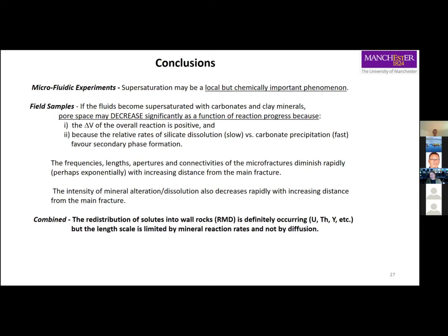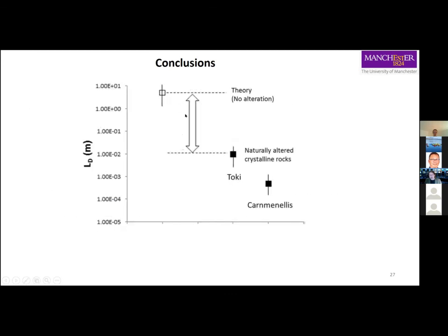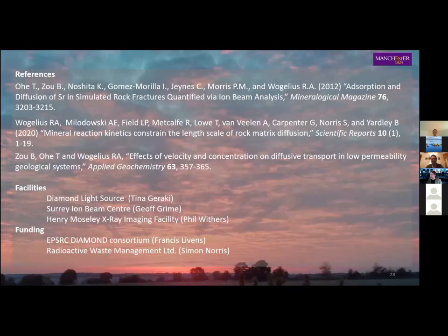The microporosity and fracture connectivity will probably decrease exponentially as you get further away from the fracture, as will rock alteration. The redistribution of solids into the wall rocks is definitely occurring, as shown by these tracers, but the length scale is limited by mineral reaction rates, not by diffusion. So that meter-scale length scale for secondary phase formation is probably not what needs to be considered for rock matrix diffusion — the relevant length scale is probably millimeter to centimeter. Thank you very much for your attention.